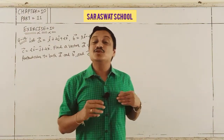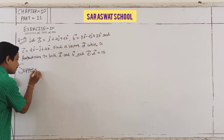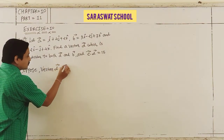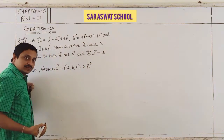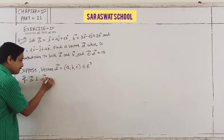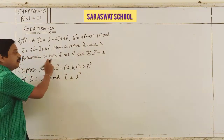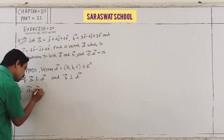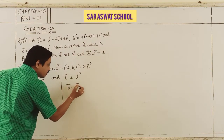First, I assume vector d = (a, b, c), just as an assumption — a, b, c belong to R³. Now, if a is perpendicular to d and b is perpendicular to d — given perpendicular to both — then a dot d = 0 and b dot d = 0.